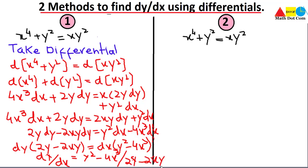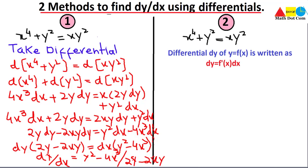In Method 1, we take the differential on both sides and apply differentiation rules to all functions, making sure to write dx or dy with every term. Now let's move to Method 2, which uses the formula: dy = f′(x) dx. This is the same concept used in Method 1 but applied differently.